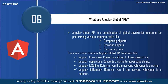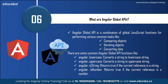Next: what are Angular global APIs? Angular global API is a combination of global JavaScript functions for performing various common tasks like comparing objects, iterating objects, and converting objects. Some common Angular global API functions include: Angular.lowercase — converts a string to a lowercase string; Angular.uppercase — converts a string to an uppercase string; Angular.isString — returns true if the current reference is a string; Angular.isNumber — returns true if the current reference is a number.